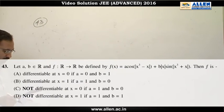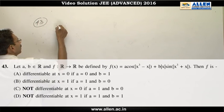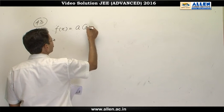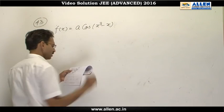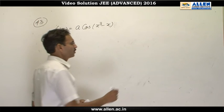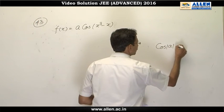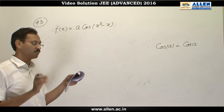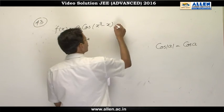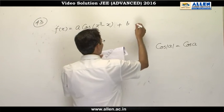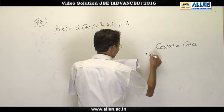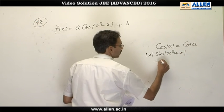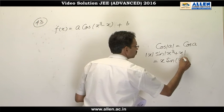Question number 43 is an easier one. f(x) equals a cos(x³-x) because we know cos(|a|) equals cos(a). Therefore, I can write it as cos(x³-x) rather than writing |x³-x|. Then plus b|x|sin(|x³+x|).